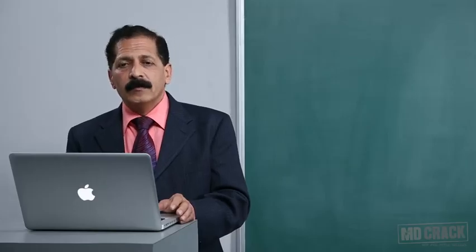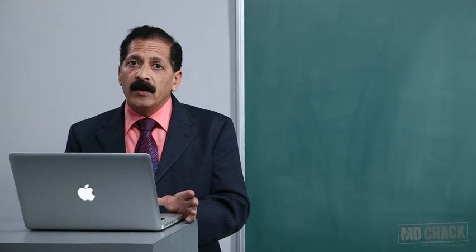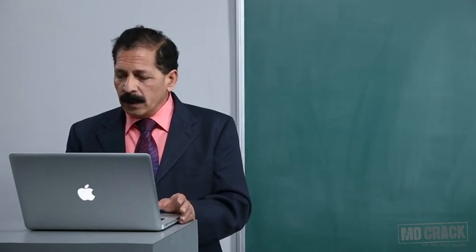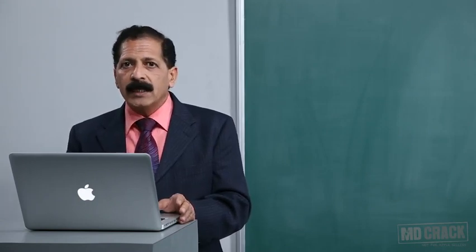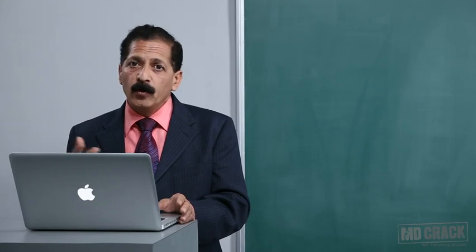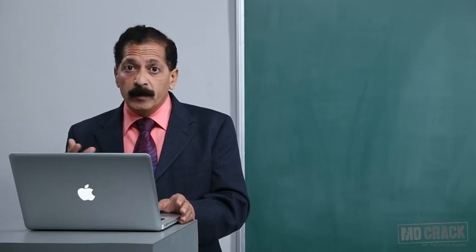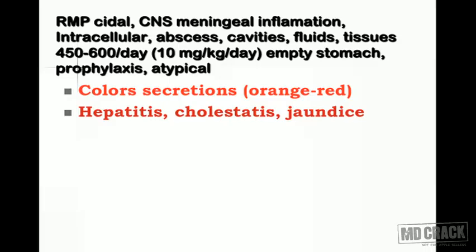This coloring is not harmful, but patients must be instructed about it. A patient seeing orange-red urine may fear they are bleeding, so it is important to warn them before starting rifampin. Another important adverse effect is hepatitis, cholestasis, and jaundice — affecting the liver.